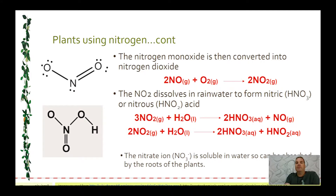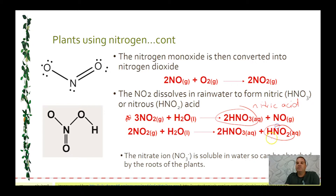These equations show how nitrogen is converted into a water-soluble form. The nitrogen dioxide can dissolve in water to form nitric acid, and it can also form nitrous acid. Both of these are water-soluble, which allows the plants to absorb the nitrogen through their root system.